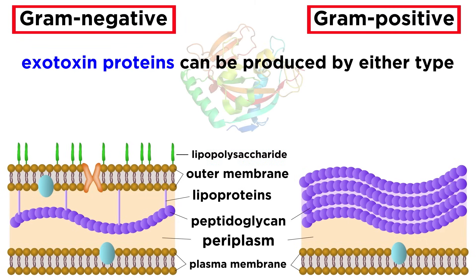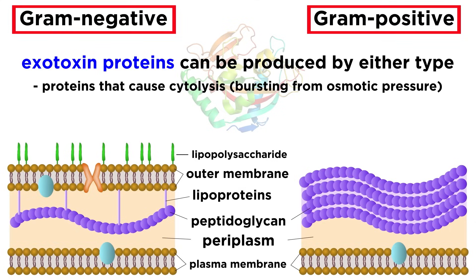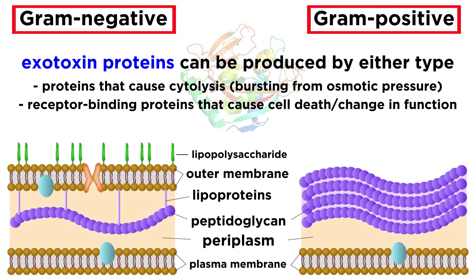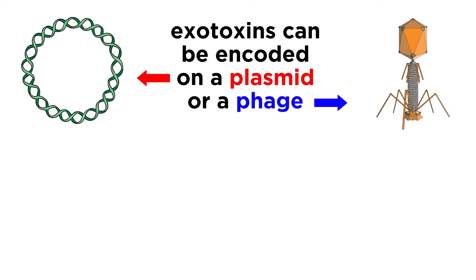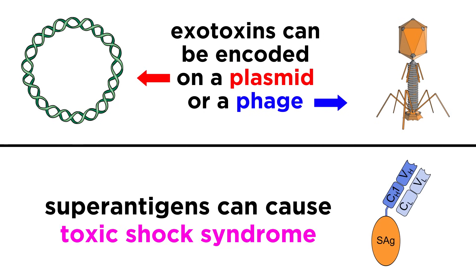Exotoxin proteins, on the other hand, can be produced by either gram-positive or gram-negative bacteria. Proteins that fall into this category include those that cause cytolysis — which causes a cell to burst from osmotic pressure — or receptor-binding proteins that either cause cell death or change their function altogether. Exotoxins are often encoded on a plasmid or a phage. Another category of toxins is superantigens, which activate the immune system to a life-threatening degree, causing toxic shock syndrome.